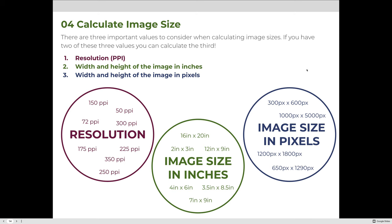Let's get to the math portion of this lesson. There are three important values when calculating image sizes: resolution (pixels per inch), the width and height of the image in inches, and the width and height of the image in pixels. If you have any two of these values, you can calculate the third. But if you only have one, you cannot calculate either of the other two.